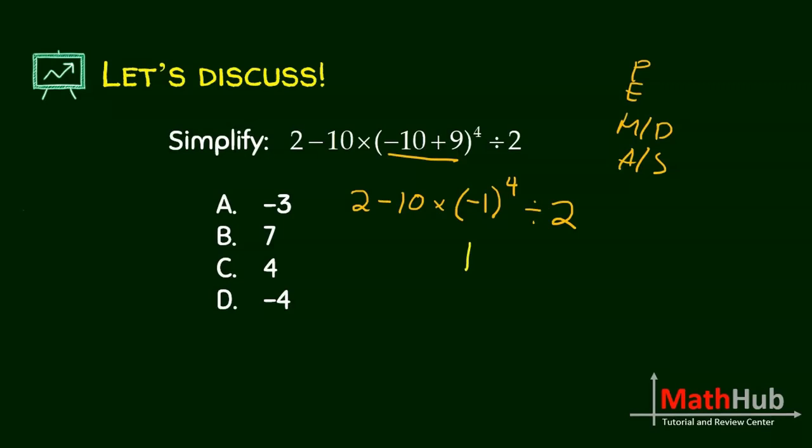For example, I gave you negative 1 raised to 99. The answer is either 1 or negative 1. It's just a matter of looking at the exponents. This means that you have 99 negatives, and 99 is odd. So therefore this is negative.